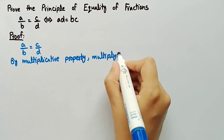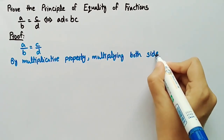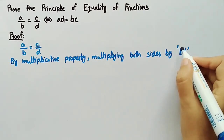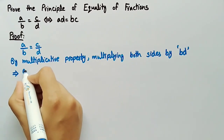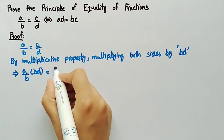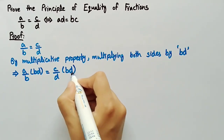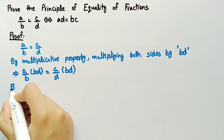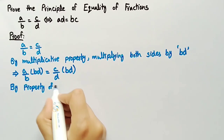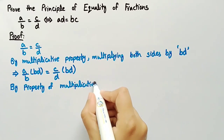multiplying both sides by the product b·d, we get a/b into b·d equal to c/d into b·d. By the property of multiplicative identity,